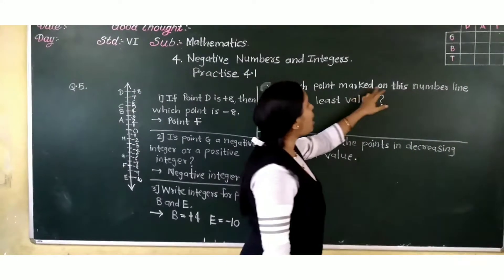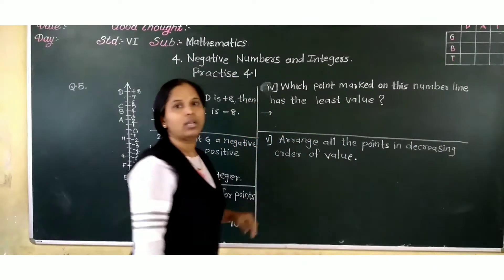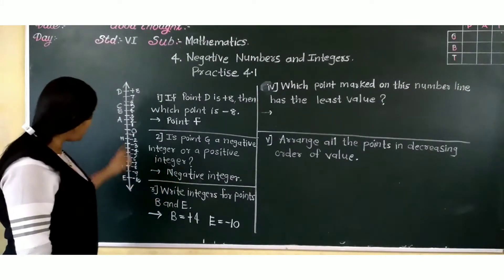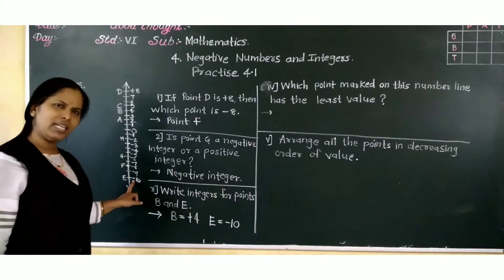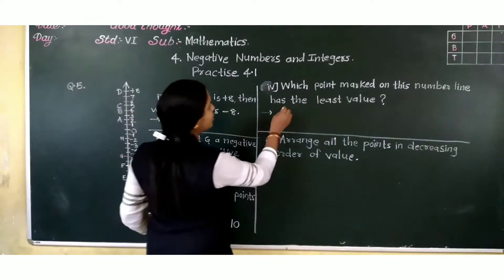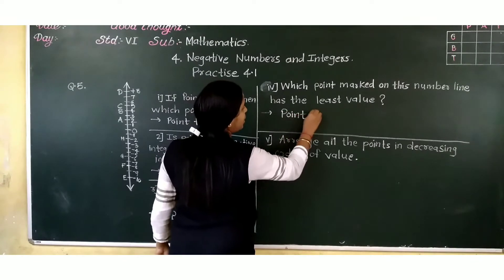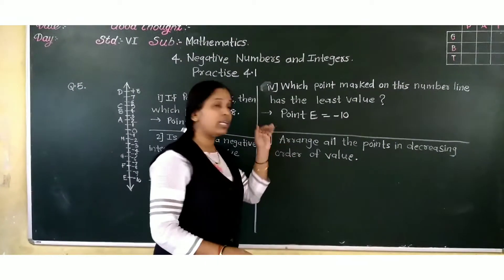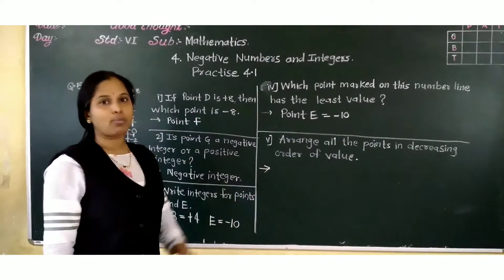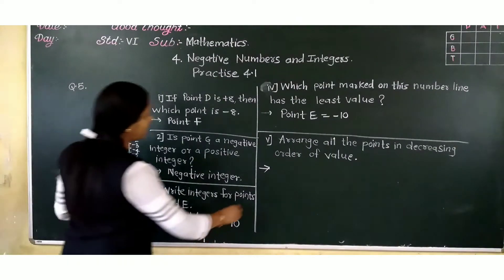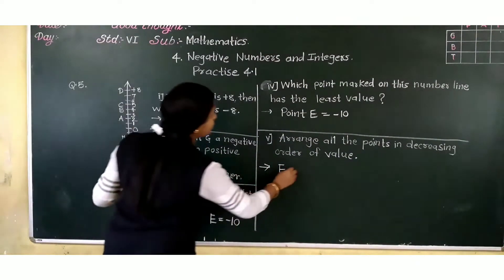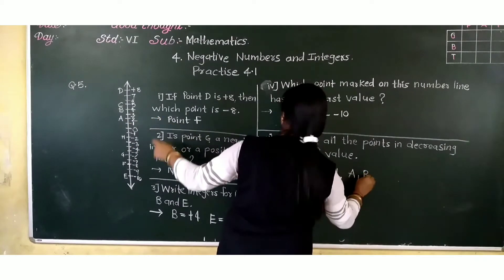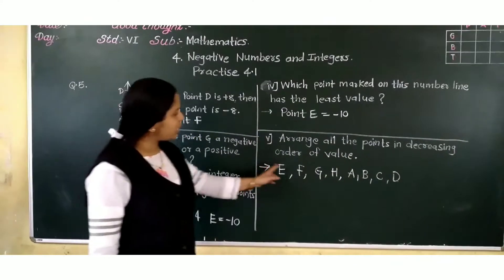Now the fourth question: which point marked on this number line has the least value? In this number line, which is the least value integer? The smallest one is minus 10, and that is point E. So point E has the least value, that is minus 10. Now the fifth: arrange all the points in decreasing order of value, meaning smallest first. So which point will come first? E, then F, then G, then H, then A, B, C and D. This is the ascending order of the points.